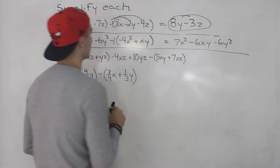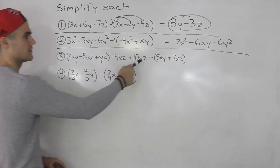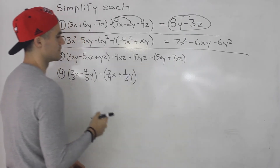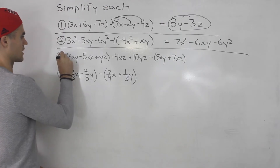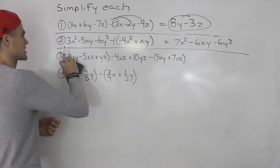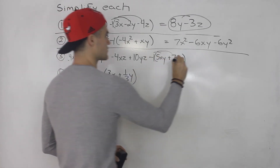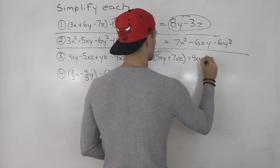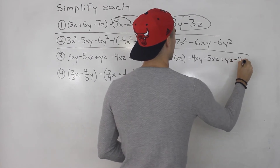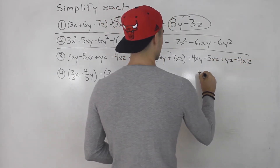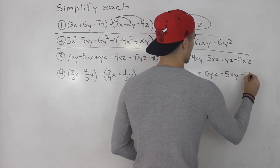Moving on to number 3, we got 4xy minus 5xz plus yz minus 4xz plus 10yz minus, in brackets, 5xy plus 7xz. Whenever you see a number in front of a bracket, you have to distribute it inside the bracket. There's a 1 in front of the first bracket, so basically everything stays the same and we can just remove that bracket. The last bracket we distribute the negative 1. Rewriting everything: 4xy minus 5xz plus yz minus 4xz, plus 10yz, and then minus 5xy minus 7xz.